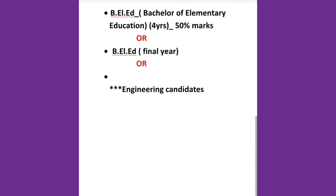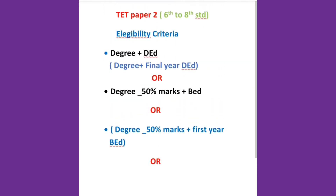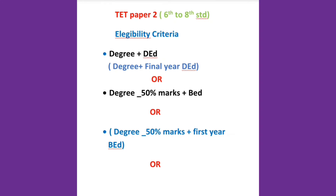These are the eligibility criteria to appear for TET Paper 1 and Paper 2. We are expecting the TET exam notification to be released in the first week of July or end of June, so get ready for those exams. If you are a fresh candidate who has just completed your BA and is waiting for the notification, you can get an idea from our upcoming videos — we will upload previous year TET question papers. Kindly go through the official notification whenever it is released, and check what changes they have brought in the eligibility criteria.